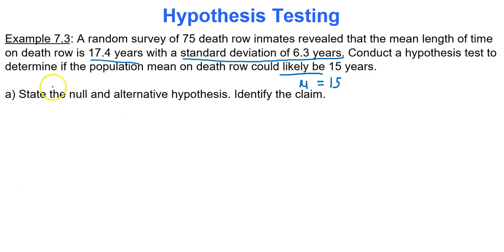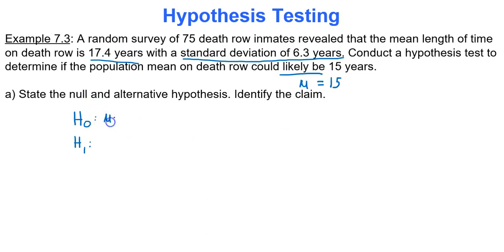State the hypotheses and identify the claim. You have your null hypothesis and your alternative hypothesis. Mu equals 15 — which hypothesis always has the equal to? That would be your null hypothesis, so the claim would be the null hypothesis. The opposite of equal to is not equal to, so we're dealing with what is called a two-tailed test here.